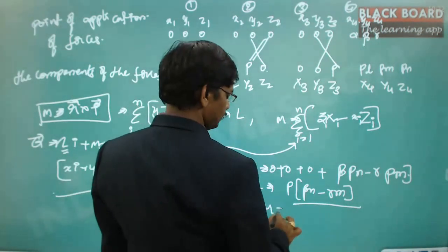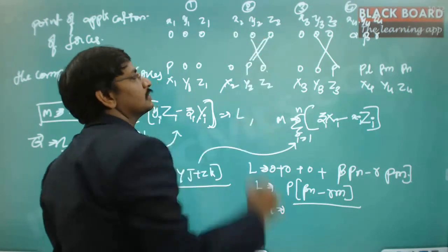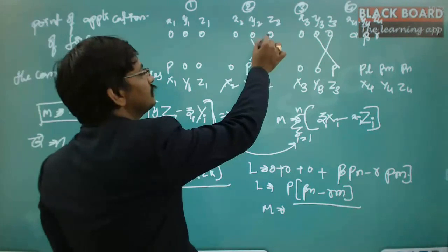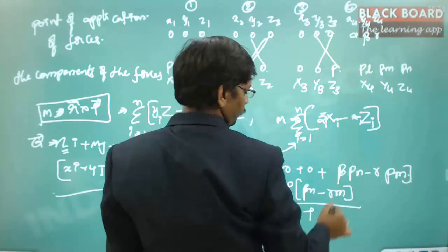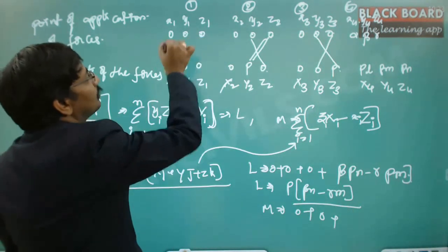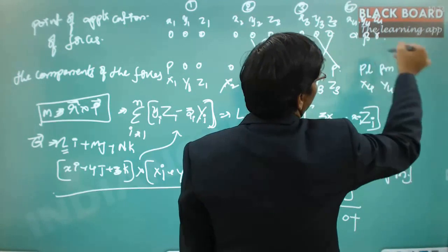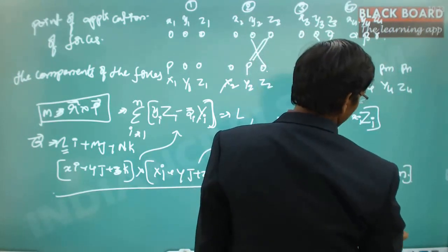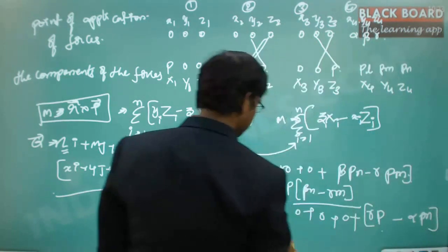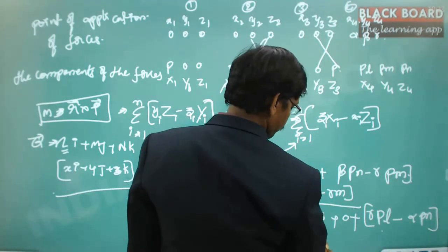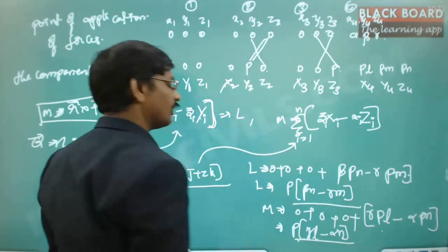Similarly, the M component uses AD - BC for the J column. Contributions from forces 1, 2, 3 are all zero. The non-zero contribution from force 4 gives: γ·PL - α·PN. So M = P(γL - αN).